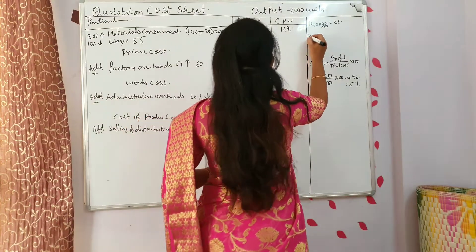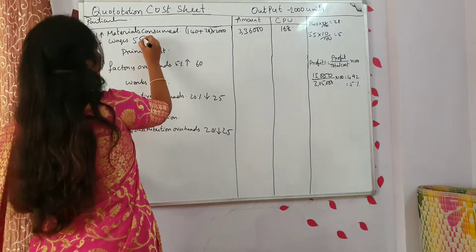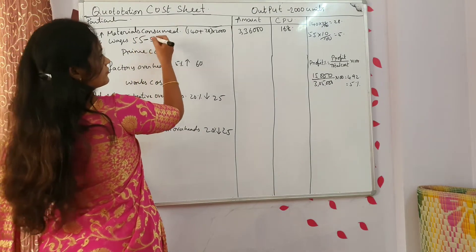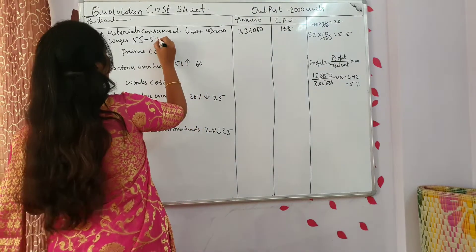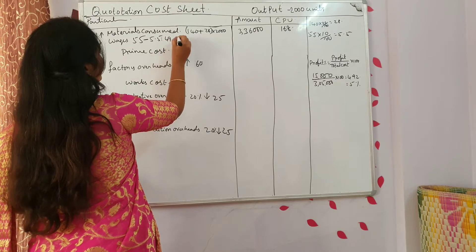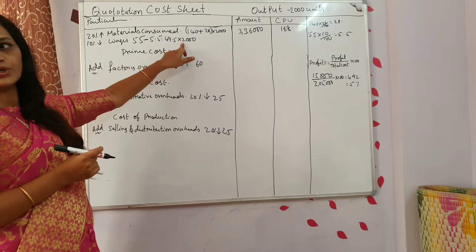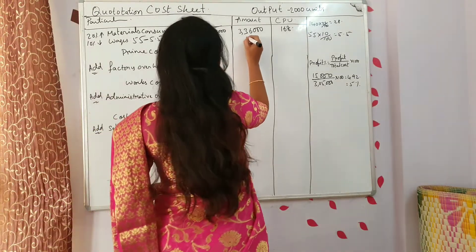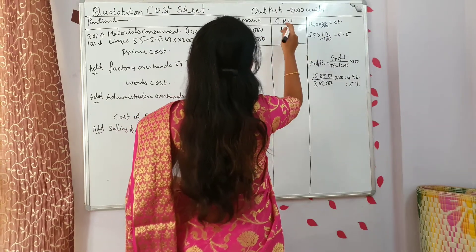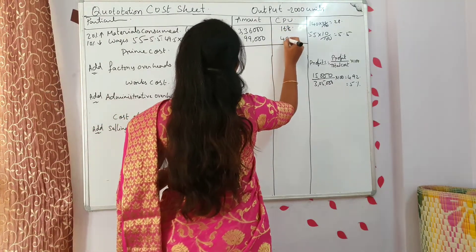Wages: actual price is 55, and it is decreased by 10%. So 55 into 10% — you are getting 5.5 rupees. It has decreased by 5.5. So 55 minus 5.5 equals 49.5 into 2000 — you will get 99,000. If you cross-check: 99,000 divided by 2000 — you will get 49.5.